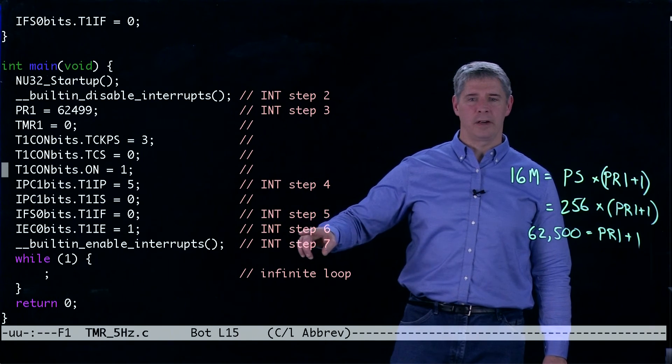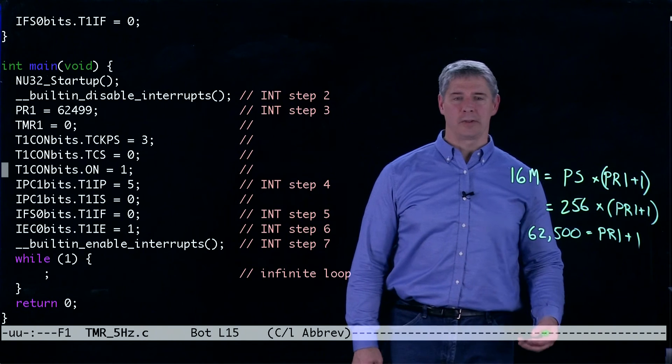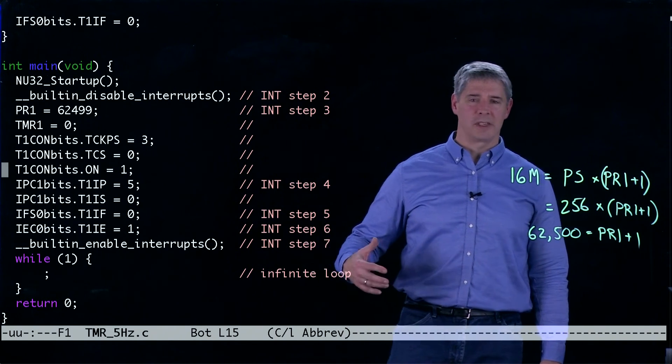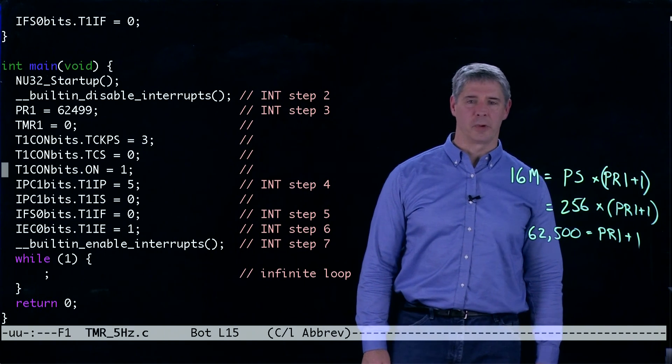Interrupt step 5 here is to set the flag to 0 so that there is no interrupt pending. Then we want to enable the interrupt in step 6 and finally in step 7 we're going to tell the CPU to start paying attention to interrupt requests again.